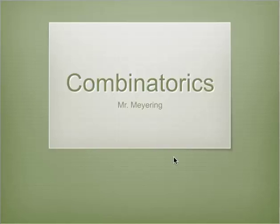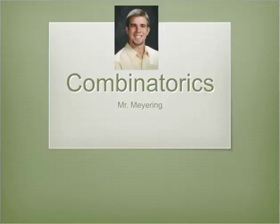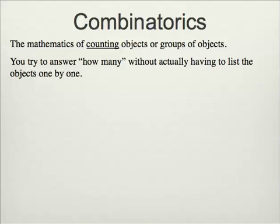You will definitely want to look at all the ones following up as we continue to look at some other videos. Basically, combinatorics is the mathematics of counting objects or groups of objects. Understanding the different ways that things can come together is important. And essentially, what you're trying to do is answer how many ways you can arrange things without actually having to list all of them out, because that can obviously become very difficult.